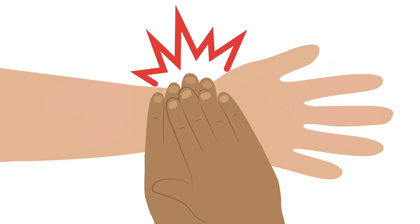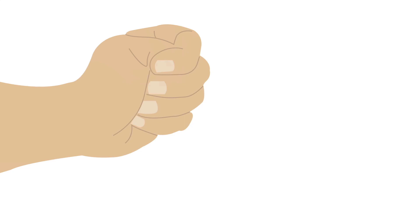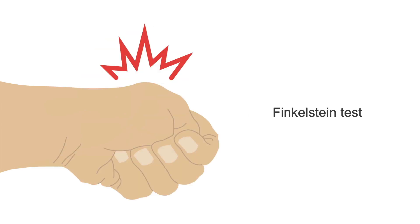On exam, you'll elicit pain with palpation just distal to the radial styloid process, and you may even feel crepitation and enlargement of this area. The maneuver used to make this clinical diagnosis is called the Finkelstein test: the patient tucks their thumb in their hand and then ulnar deviates the wrist. Severe pain during this maneuver is a positive result.